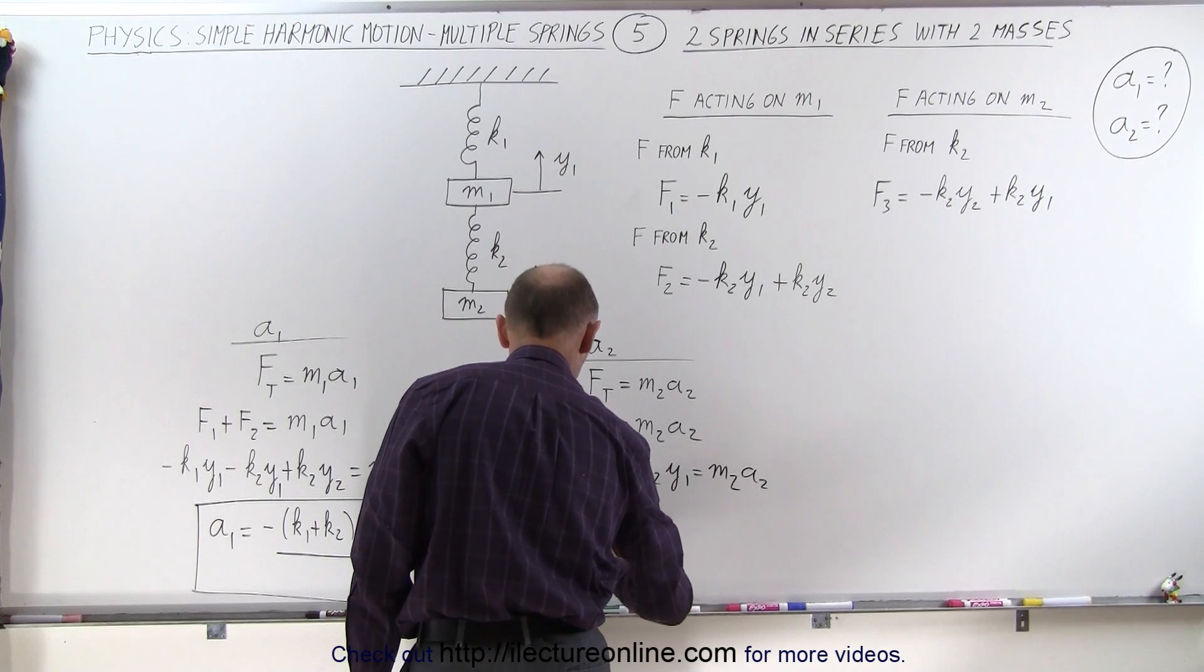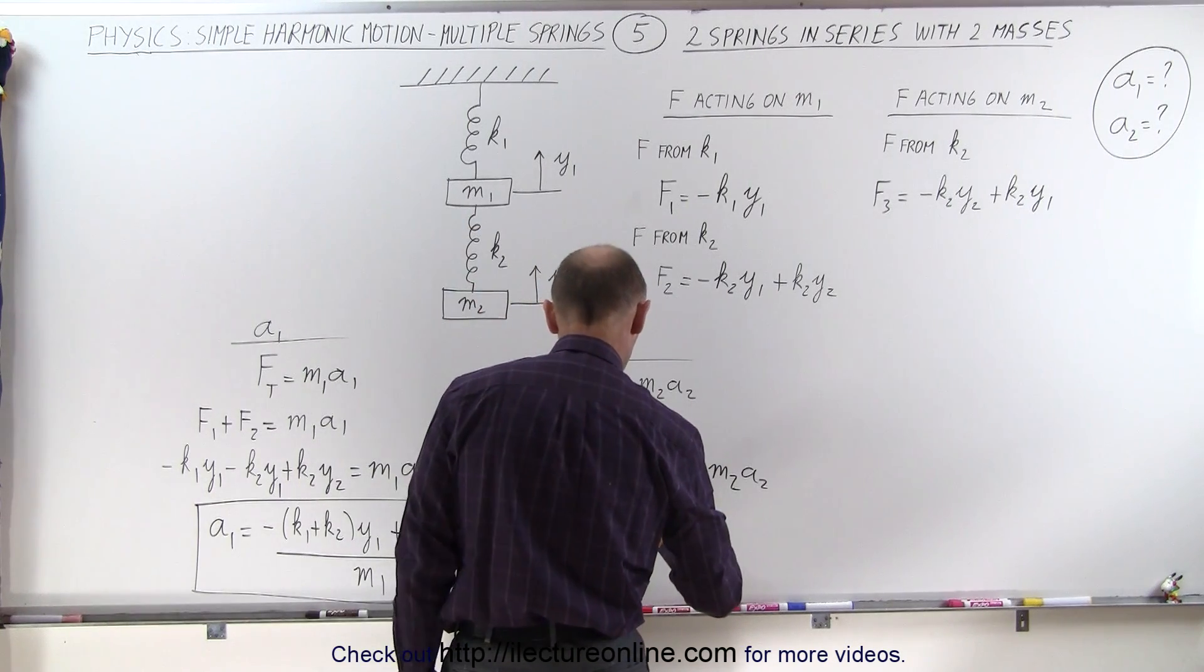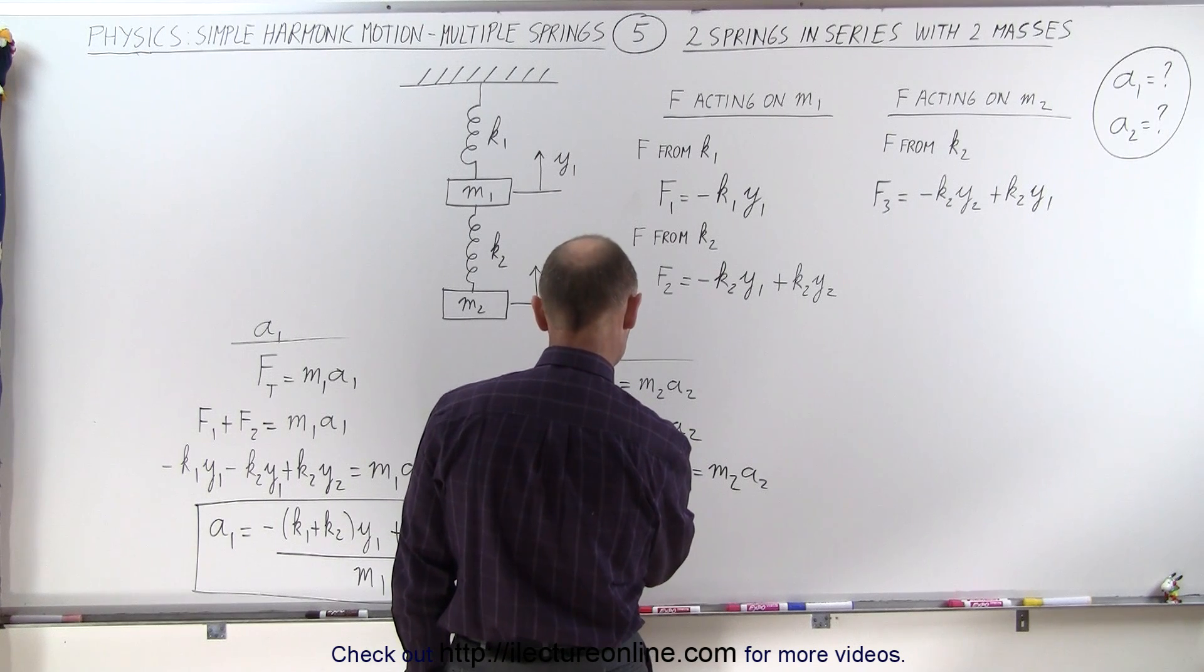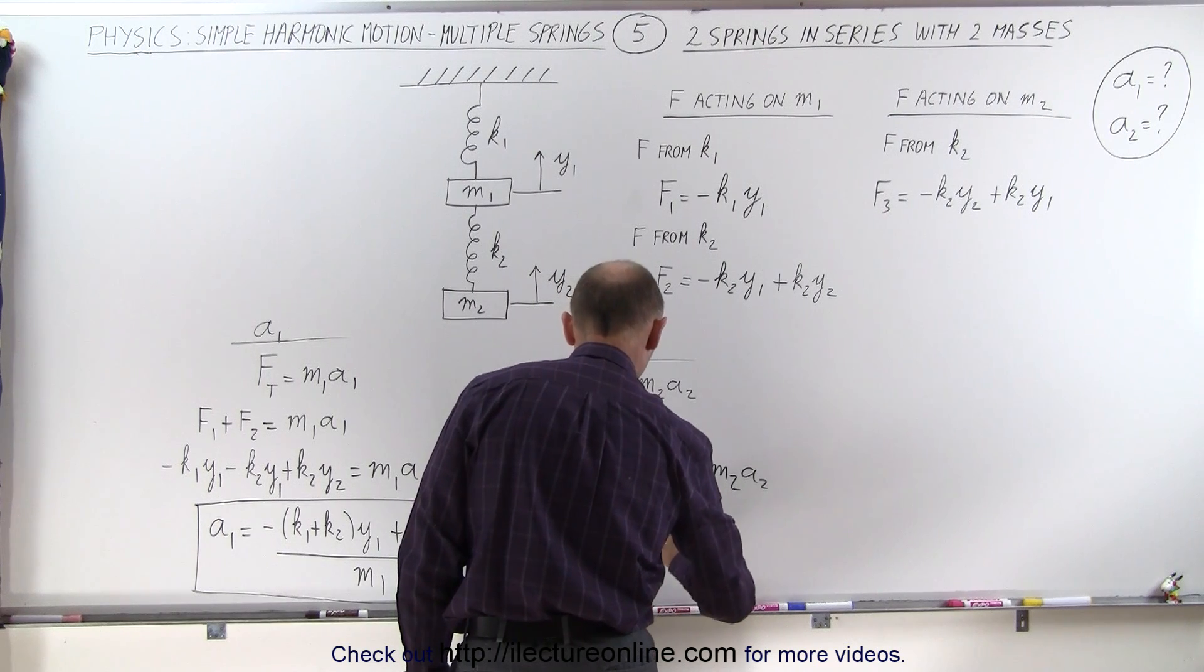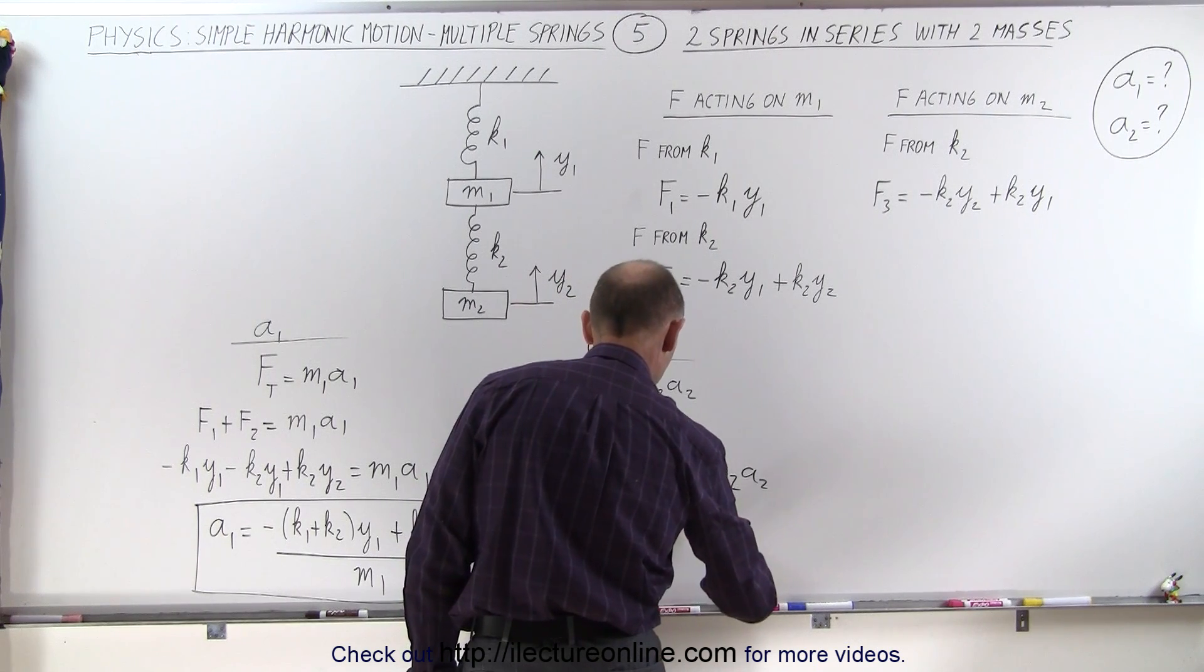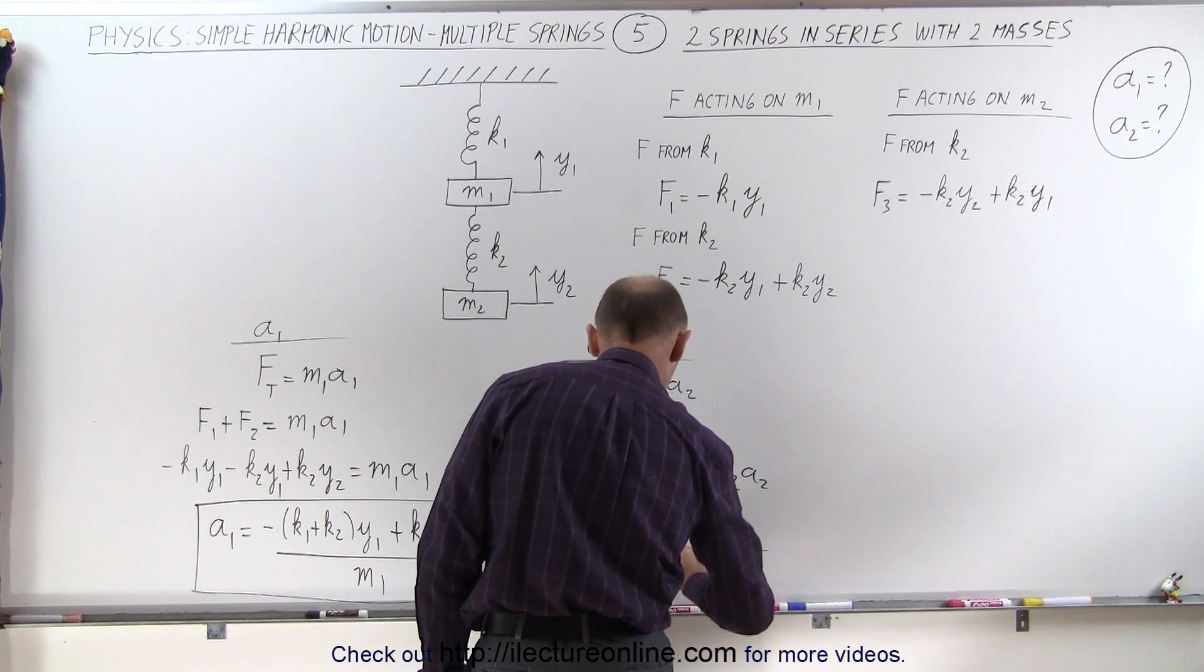And f3 is minus k2 y2 plus k2 y1 equals m2 a2. And finally, I can say that a2 is equal to, and I can reverse these two in the order. Let's see here. Now, I might as well just leave it like that.